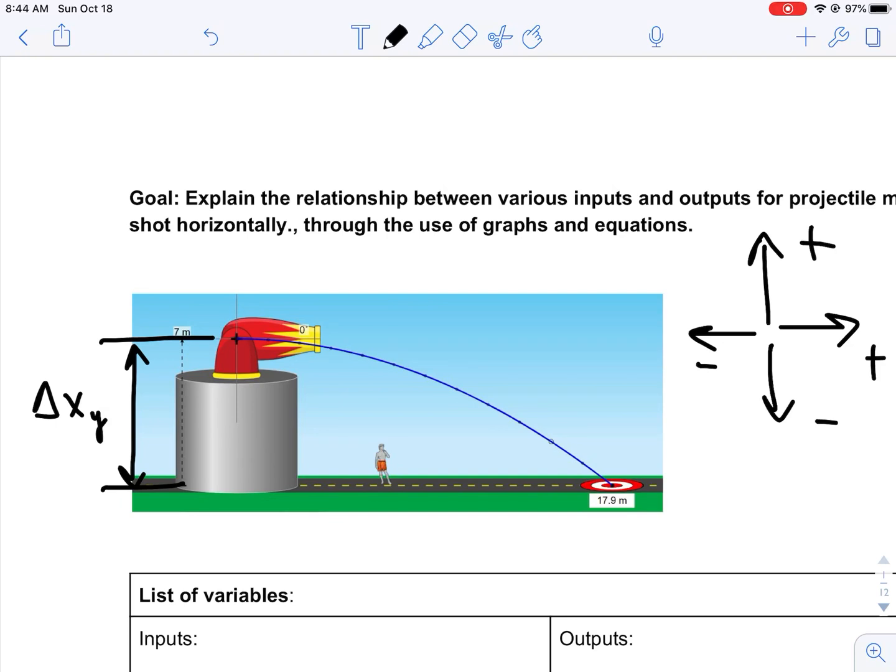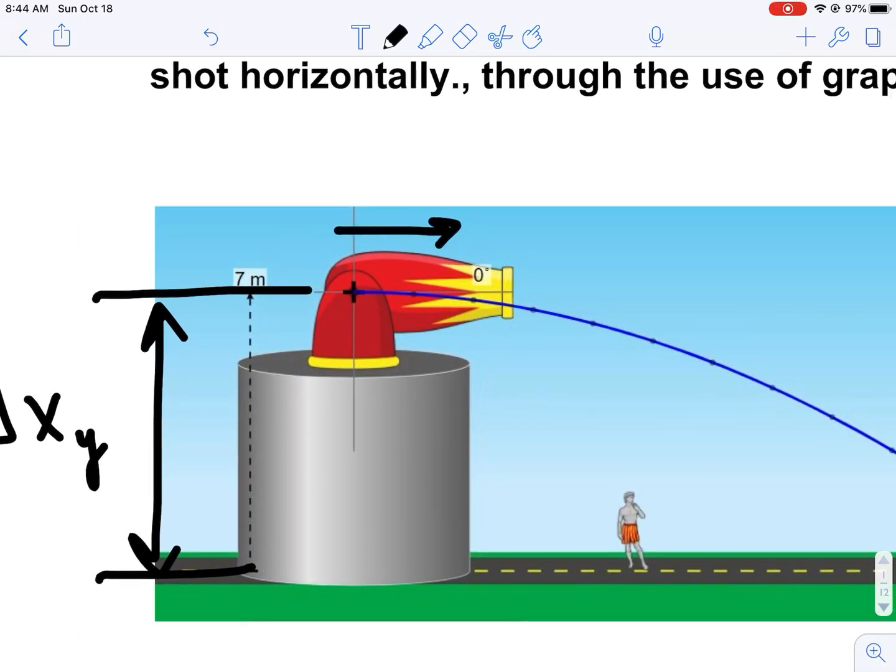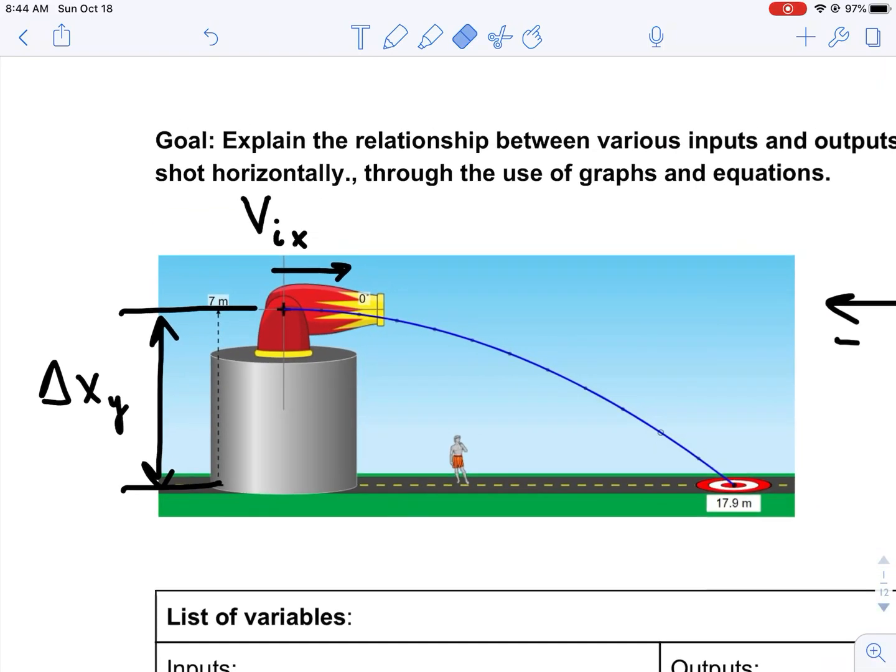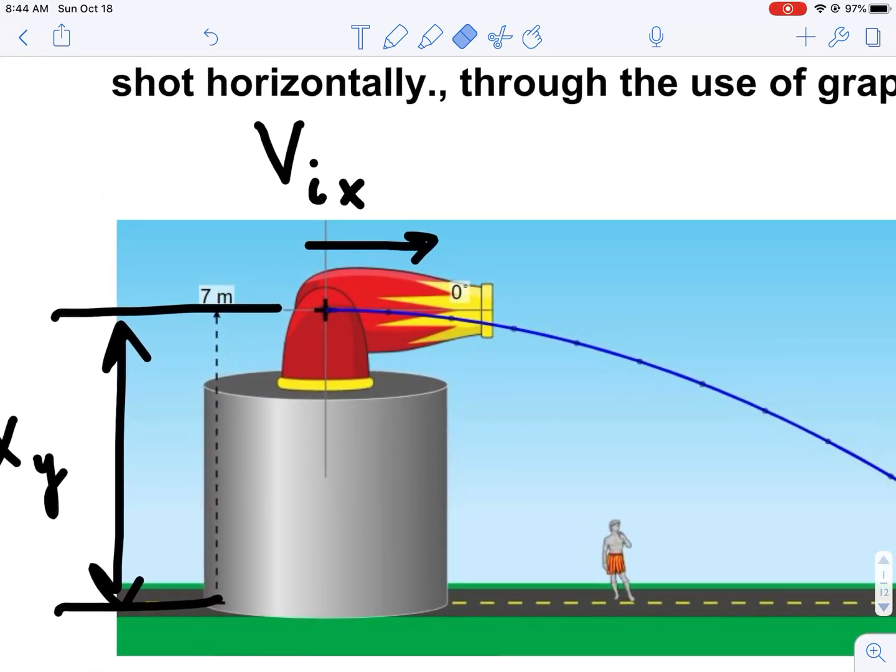That's one of our inputs. We can also modify how fast we shoot the object horizontally. Our other input is going to be initial velocity in the x direction. That's something that we can modify, our initial horizontal velocity. Now, because we're launching it horizontally, there is no initial vertical velocity. Our initial vertical velocity is zero. For all the problems that we're investigating right now, we're going to launch horizontally.